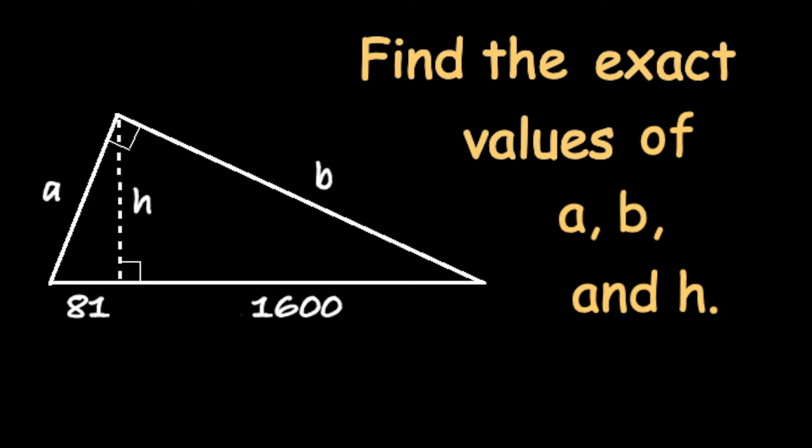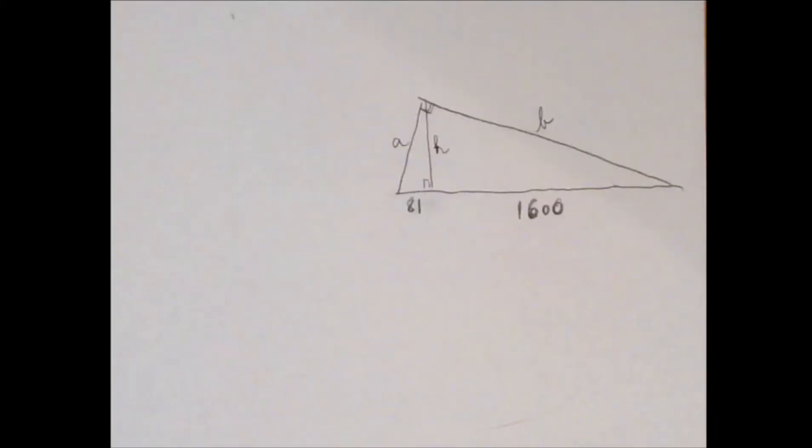We have seen a problem like this before. We have a right triangle, and in a right triangle the other two angles add up to 90 degrees. There is an expression for that: the angles are complementary.